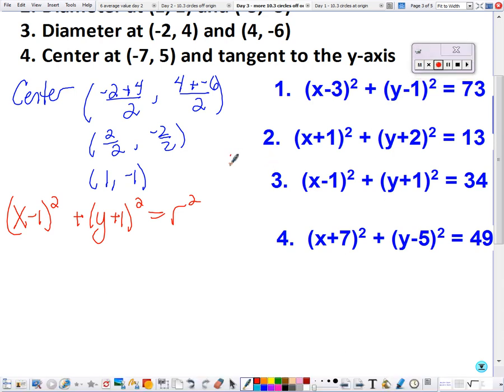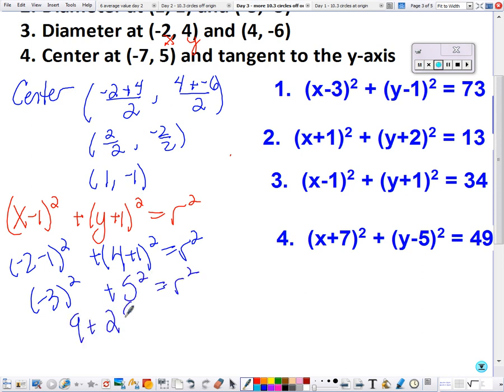Okay, so choosing a point, I think I'm going to choose (-2, 4). It doesn't matter which one you pick. We're going to solve for r squared. We get 9 plus 25, so 34 is r squared.